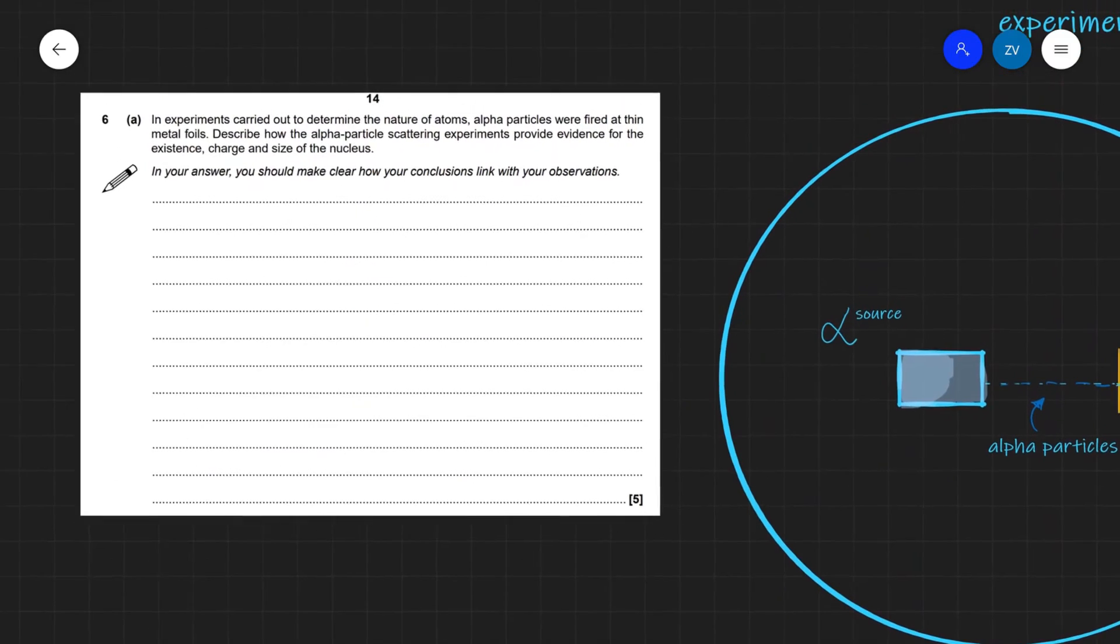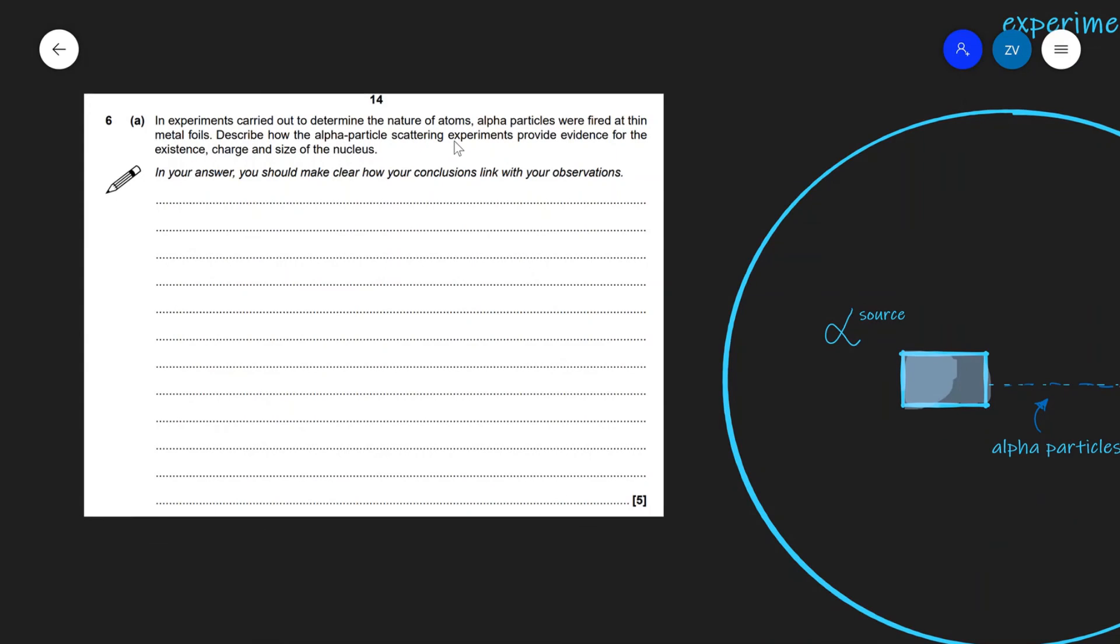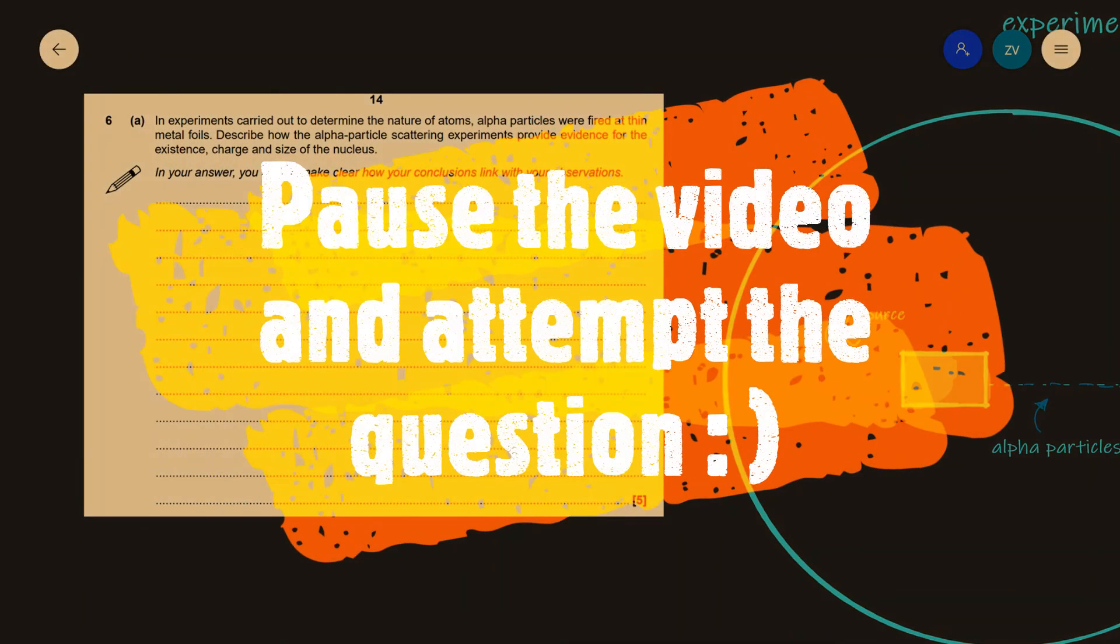We have an experiment which is used to carry out to determine the nature of the atoms. Alpha particles were fired at thin metal foils. Describe how the alpha particle scattering experiments provide evidence for the existence, charge and size of the nucleus. In your answer, make clear how your conclusions link with your observations. And this will be a perfect opportunity for you guys to pause this video and attempt the question.